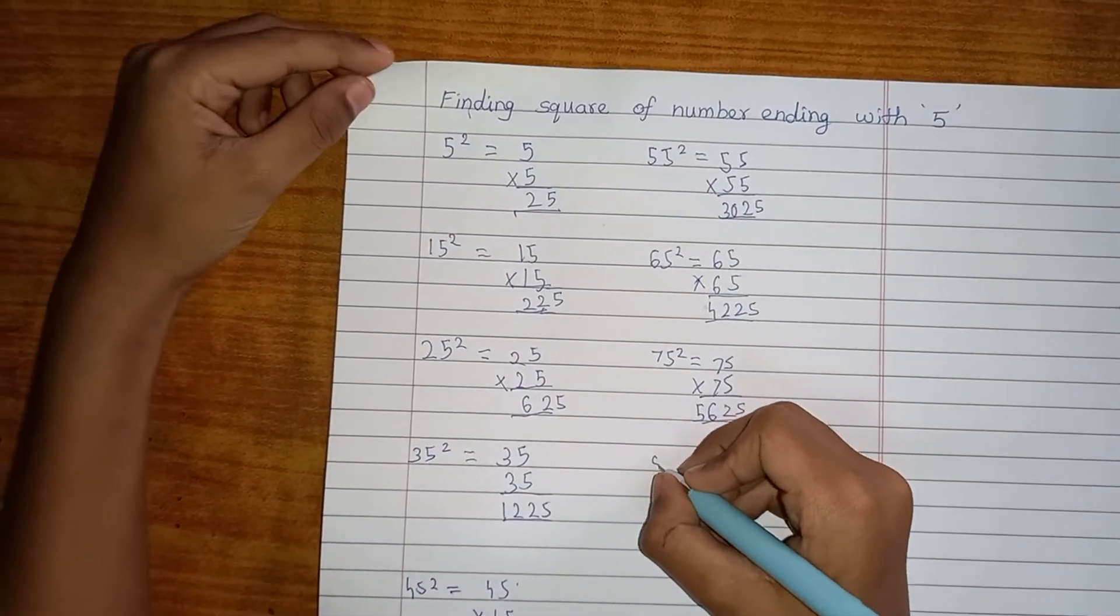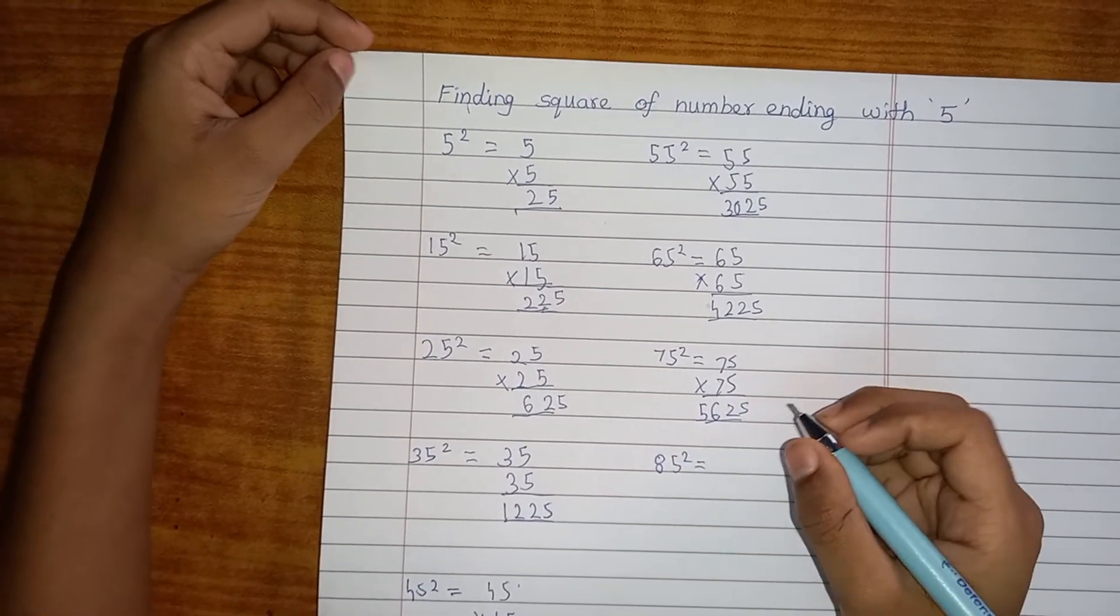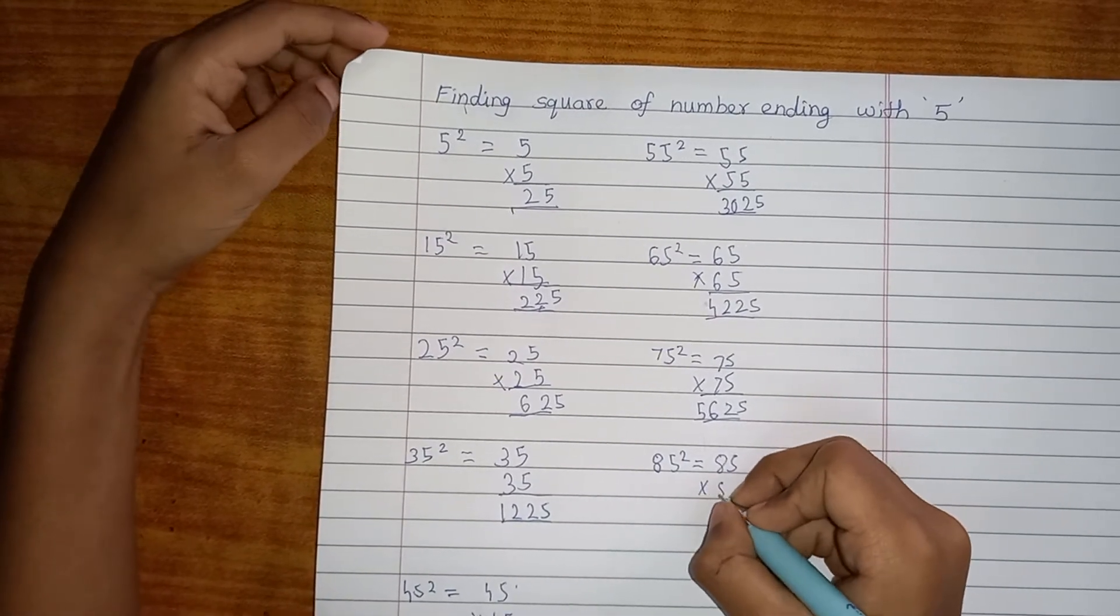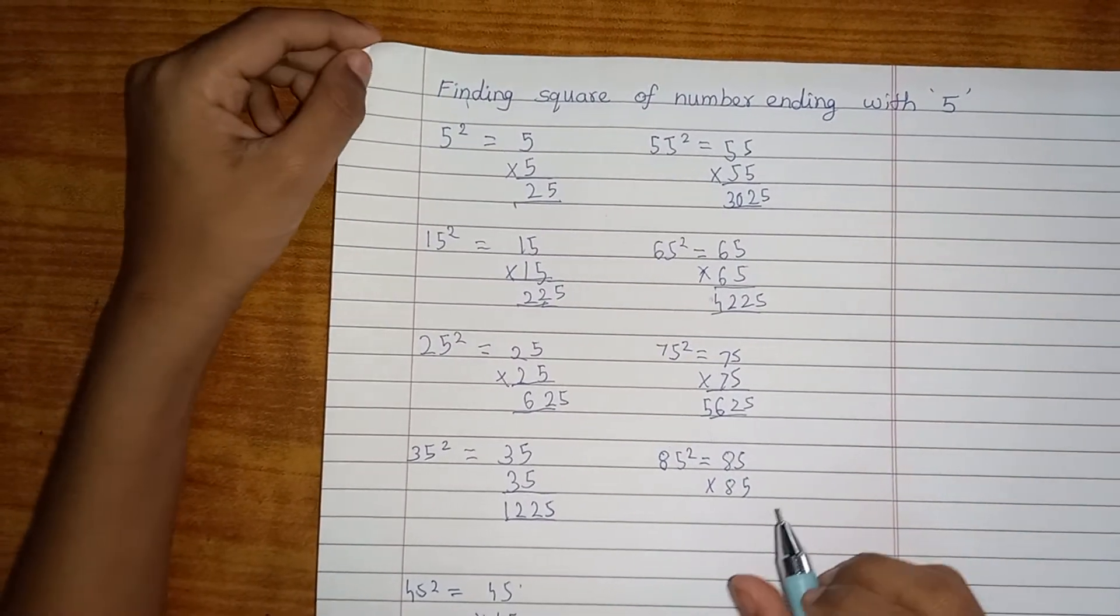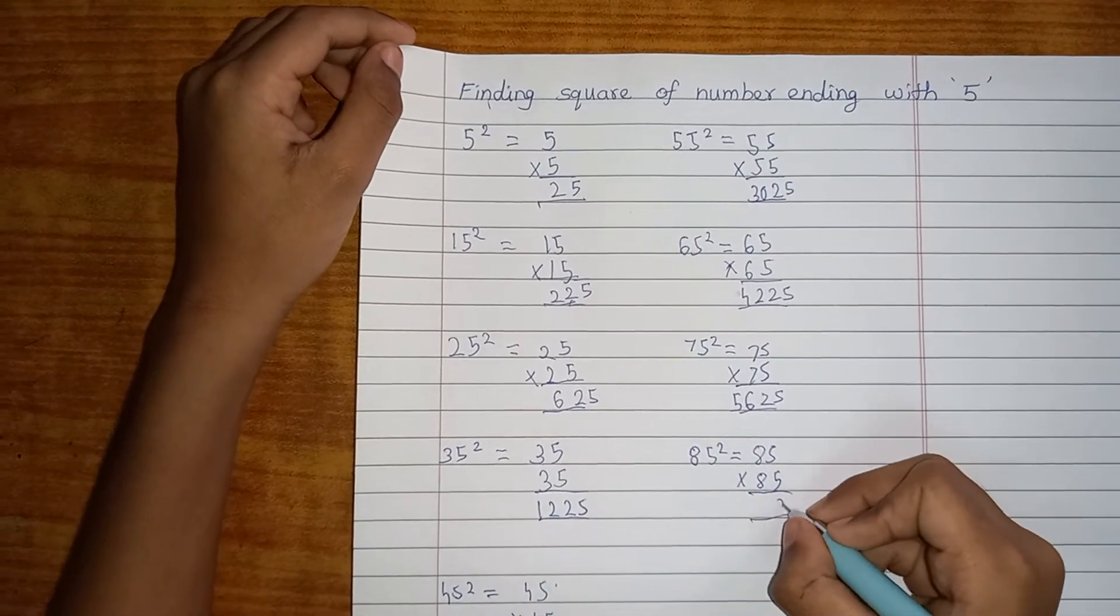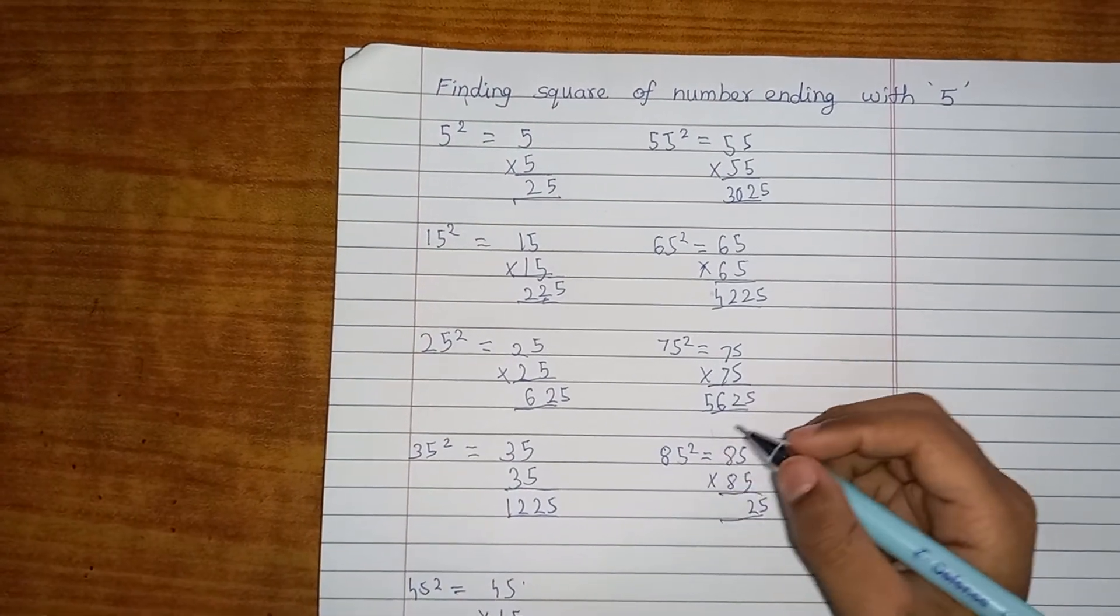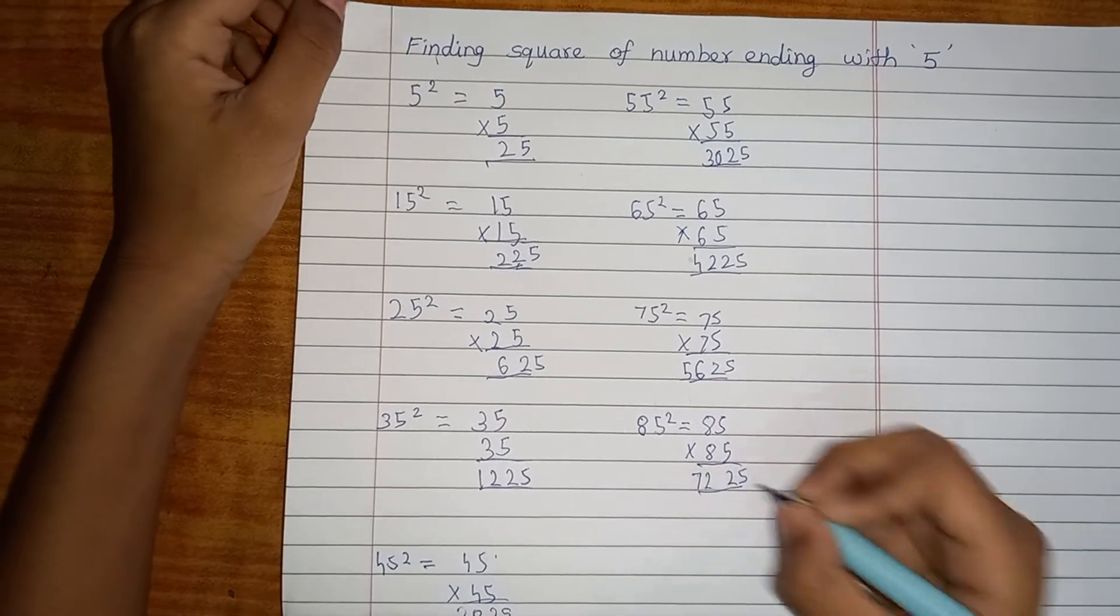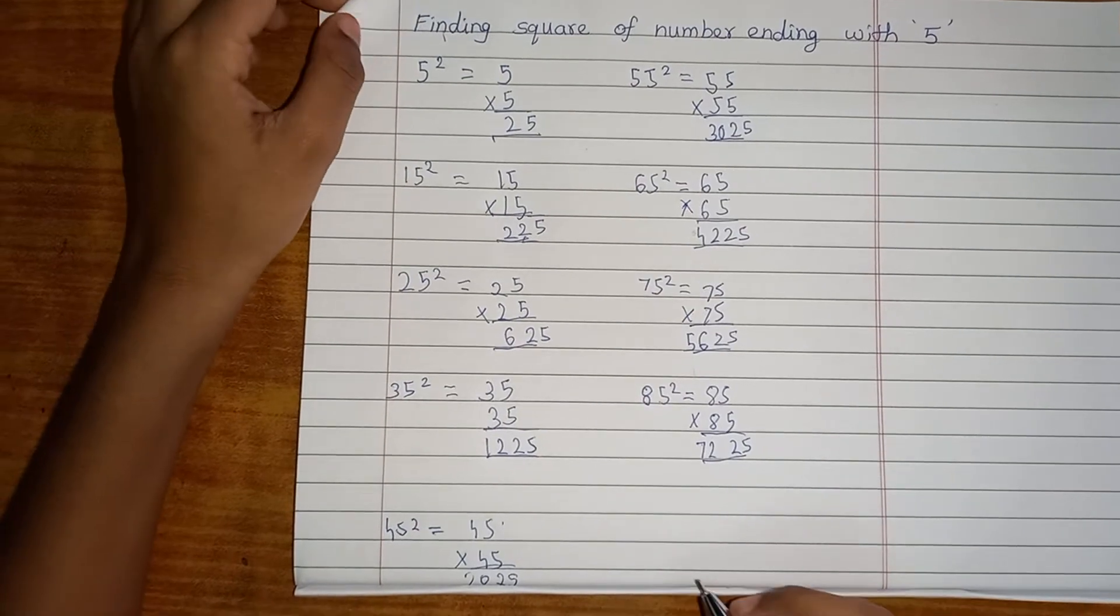Next is coming the 85 before 95. Okay. 85 multiplied by 85. There's always... Square means the same number. We should multiply it. So, let's see. 25 aside. And 8 after 9. And it becomes 7225. Let's go with the king.